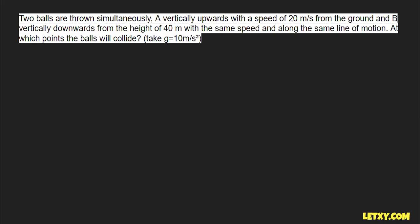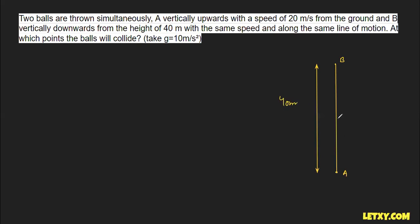Let's read the question first. Two balls are thrown simultaneously. Ball A is thrown vertically upward with a speed of 20 meters per second. Ball B is thrown vertically downward from a height of 40 meters — so the distance between points A and B is 40 meters. Both balls are thrown with the same speed along the same line of motion. At which point will the two balls collide?